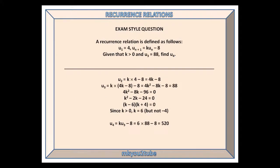Here is an exam-style question. Our recurrence relation is defined as follows: u₁ equals 4, and u_{n+1} equals ku_n minus 8. Given that k is positive and the third term is 88, find the fourth term.